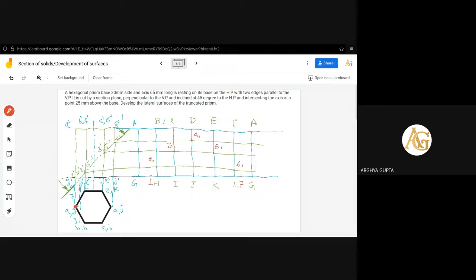All the points are found. Now they have to be joined with the straight lines with the help of scale. Four to five, five to six, and six to seven. This point will be dark as this portion will remain and other portions are removed.